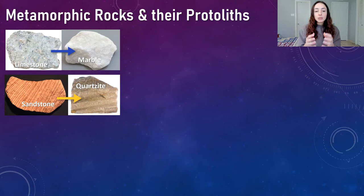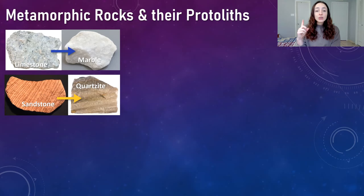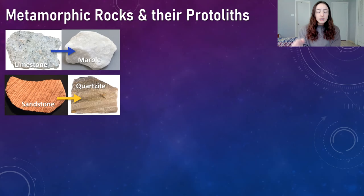When sandstones undergo metamorphism, quartz grains dominate the recrystallization fabric to produce the very hard rock quartzite. A common theme with metamorphic rocks is that they are harder than their sedimentary protoliths, because they become densely packed and recrystallized under pressure. Another compositionally similar rock to its protolith is gneiss, a high-grade metamorphic rock that typically is the metamorphic version of granite, containing mostly quartz, feldspar, and sometimes amphiboles, pyroxenes, and micas.